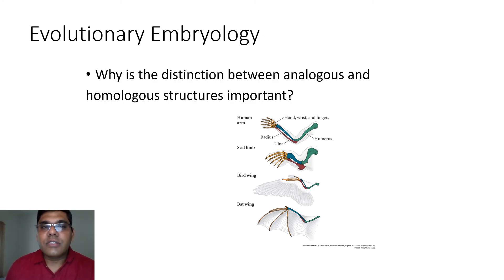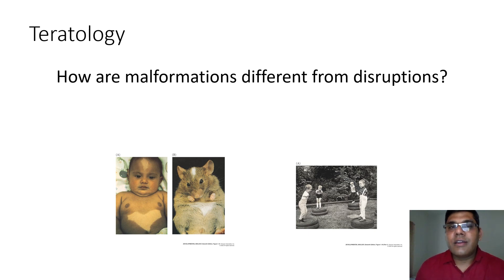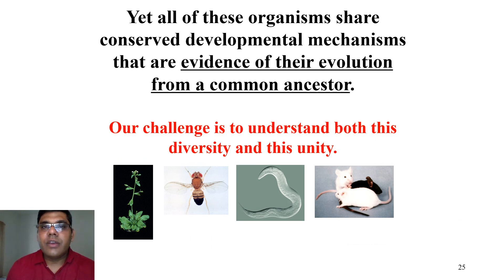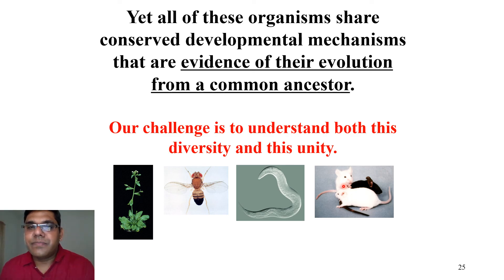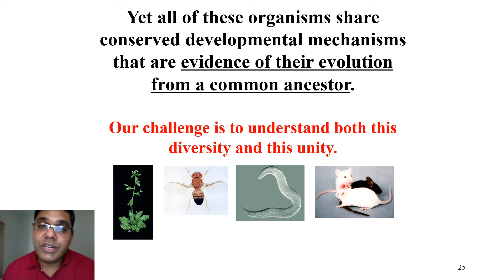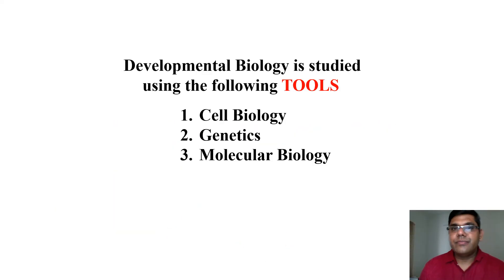During evolutionary embryology, why is the distinction between analogous and homologous structures important? In the teratology part, how are malformations different from disruptions? And organisms such as Arabidopsis, Drosophila, C. elegans, or mice — how do they share conserved developmental mechanisms that are evidence of evolution from a common ancestor? Our challenge is to understand both this diversity and the unity among these animals, and for this, developmental biology is employed.